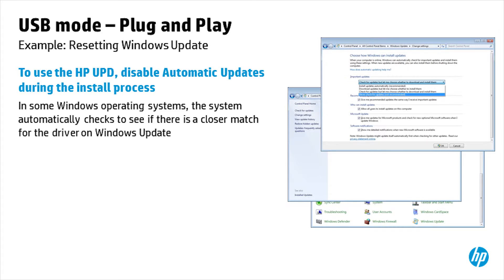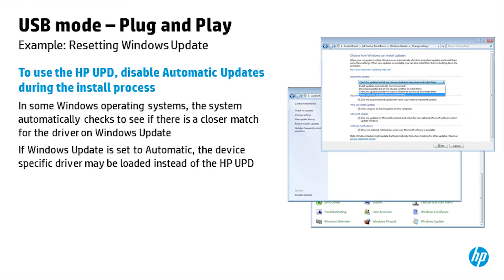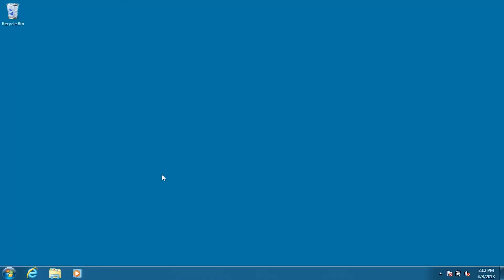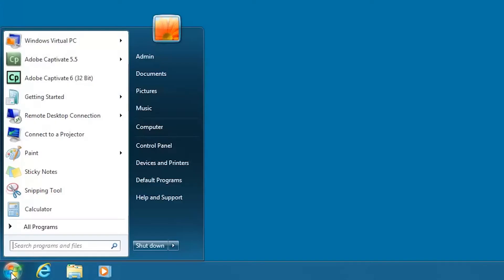To use the HP UPD, disable automatic updates during the install process. In some Windows operating systems, the system automatically checks to see if there is a closer match for the driver on Windows Update. If Windows Update is set to automatic, the device-specific driver may be loaded instead of the HP UPD.